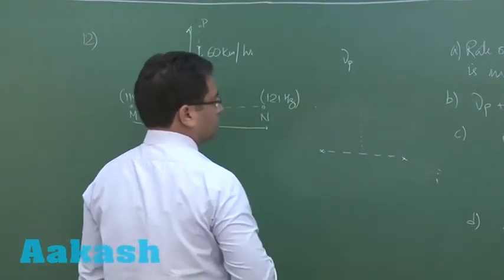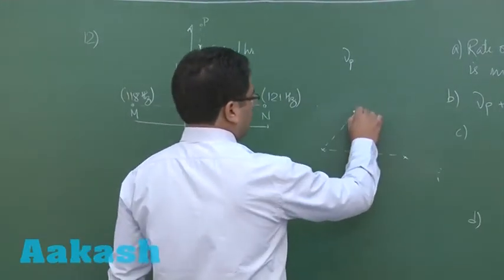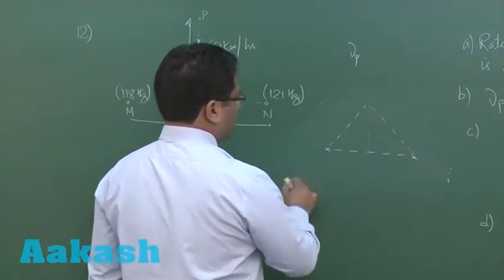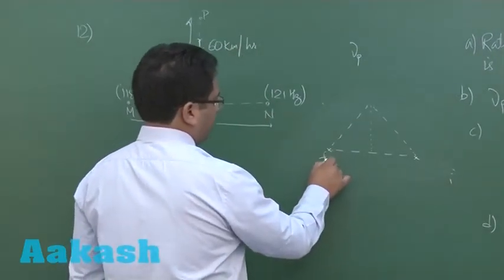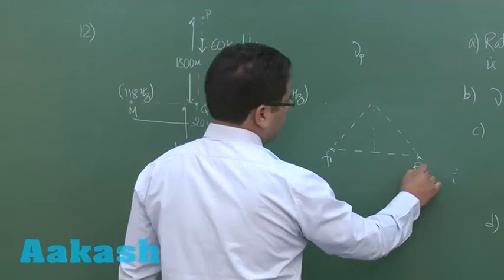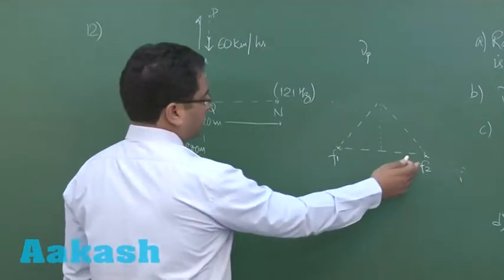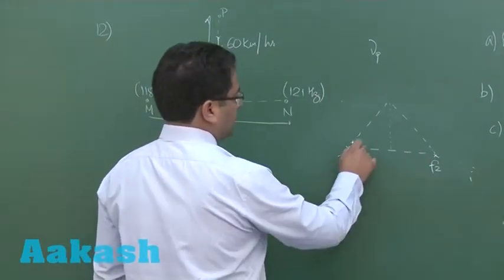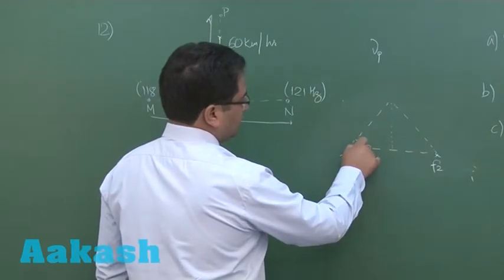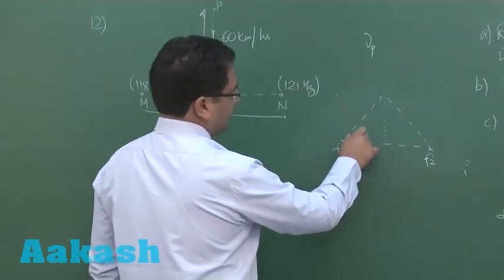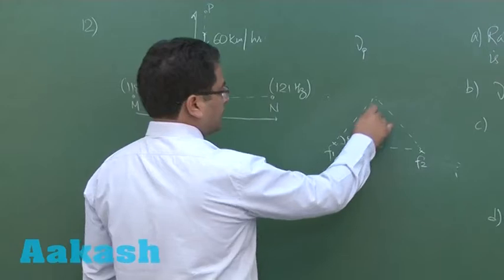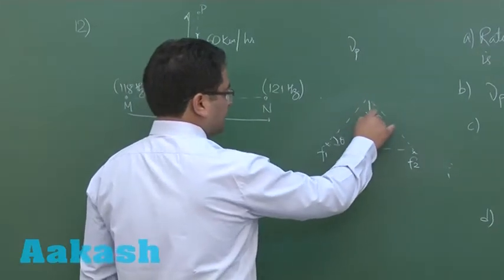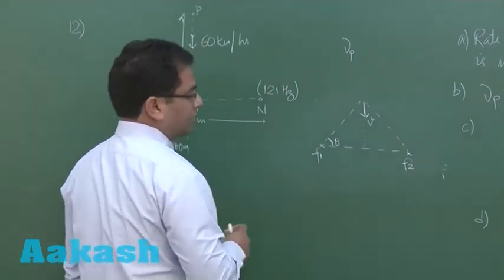This is the situation. Like here one frequency is F1, other frequency is F2. F2 being greater than F1 and let me call this angle as theta. Now here you would see this is the speed of car. So let's denote it by V.